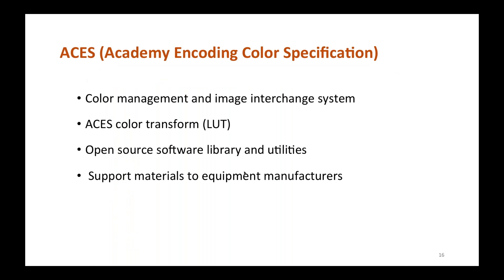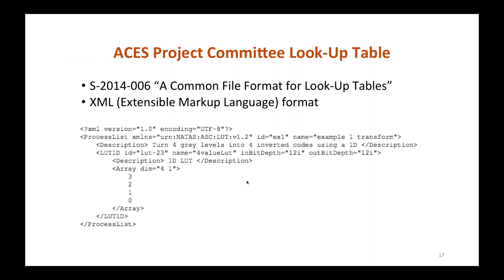The Academy of Motion Picture Arts and Sciences has developed the Academy Color Encoding Specification, or ACES, as a color management and image interchange system. ACES includes a suite of utilities including an open-source software library, transforms, lookup tables, and literature for content creators and equipment vendors. The ACES team has recently developed an XML schema designed to document multiple color transformations and lookup tables, as well as any device-dependent information needed to properly apply color values from a given application.